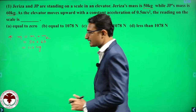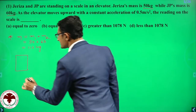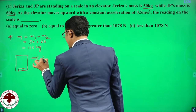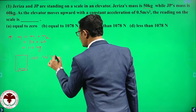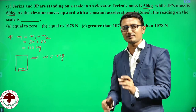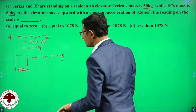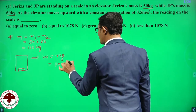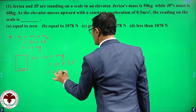First, if the lift is stationary, the scale measures weight W equals mg. M is total mass and g is gravitational acceleration, 9.8. So W equals 110 into 9.8, which equals 1078 Newton. If the lift is stationary, the scale should read 1078 Newton.